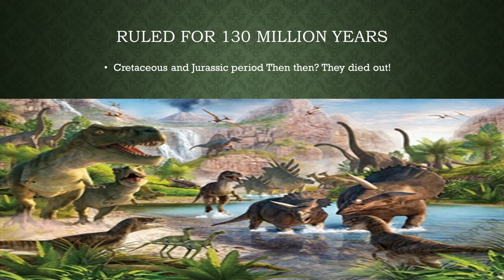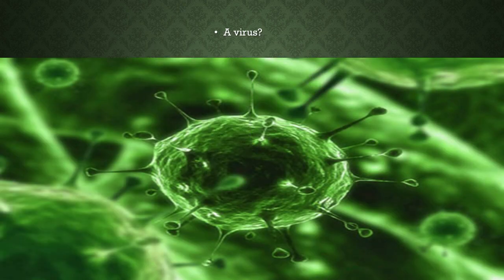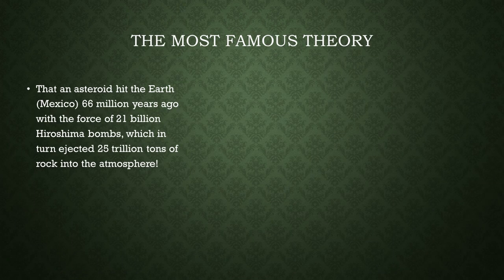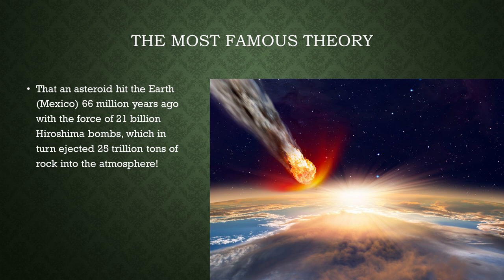But then suddenly they died out. Why? Some scientists believe it was climate change — too hot, too cold, too little oxygen. Some believe in a virus. But the most famous theory, which most scientists believe, is that the Earth was hit by a large asteroid about 66 million years ago, with the force of 21 billion Hiroshima bombs.